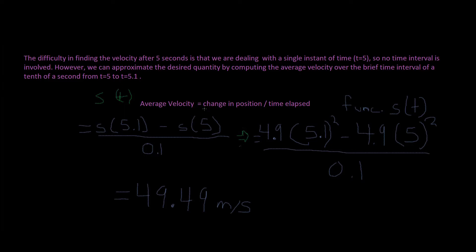Then read the question again. It says, suppose that a ball is dropped from the upper observation deck of the CN Tower in Toronto, 450 meters above the ground. Find the velocity of the ball after five seconds. So this is five seconds. This is after five seconds. So we plug in our function. s(t) equals 4.9t squared. So 4.9 times 5.1 squared minus 4.9 times 5 squared. And this gives us 49.49 meters per second.